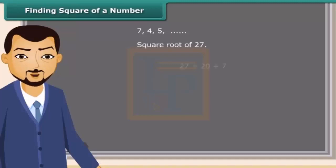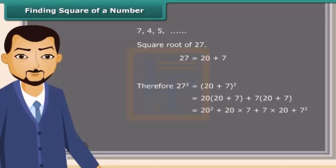We know 27 is a sum of 20 and 7. Therefore, a square of 27 is equal to (20 + 7) whole square, which equals 20 into 20 plus 7 plus 7 into 20 plus 7, which equals 20 square plus 20 into 7 plus 7 into 20 plus 7 square, which equals 400 plus 140 plus 140 plus 49, which equals 729.